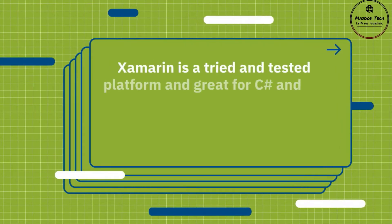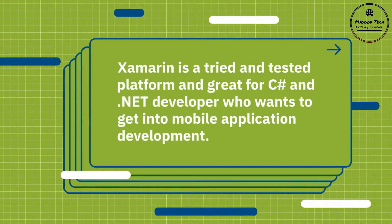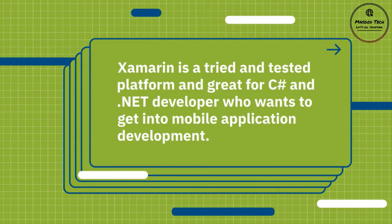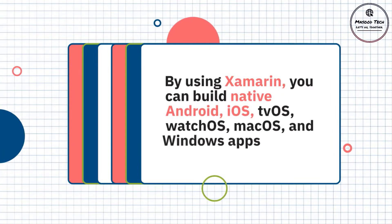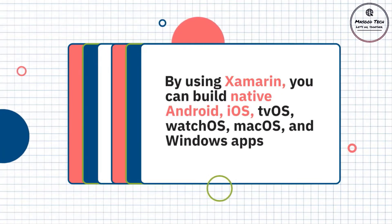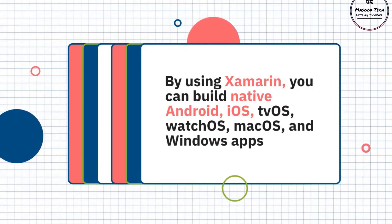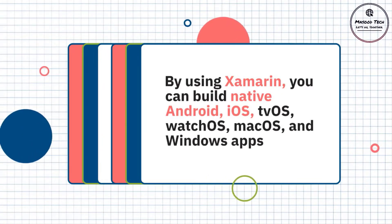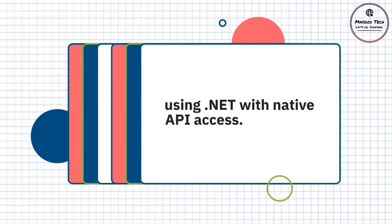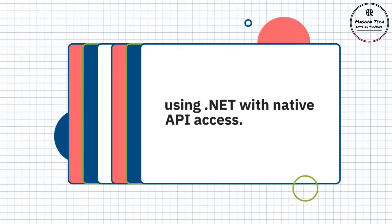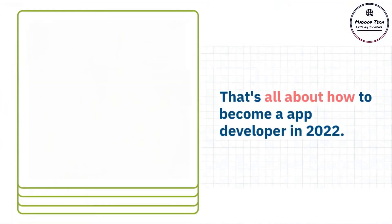Number ten: Xamarin. If you want to build native mobile applications with .NET and C#, then there is no better choice than Xamarin. Xamarin is a tried and tested platform and great for C# and .NET developers who want to get into mobile application development. Using Xamarin, you can build native Android, iOS, tvOS, watchOS, macOS, and Windows apps using .NET with native API access.